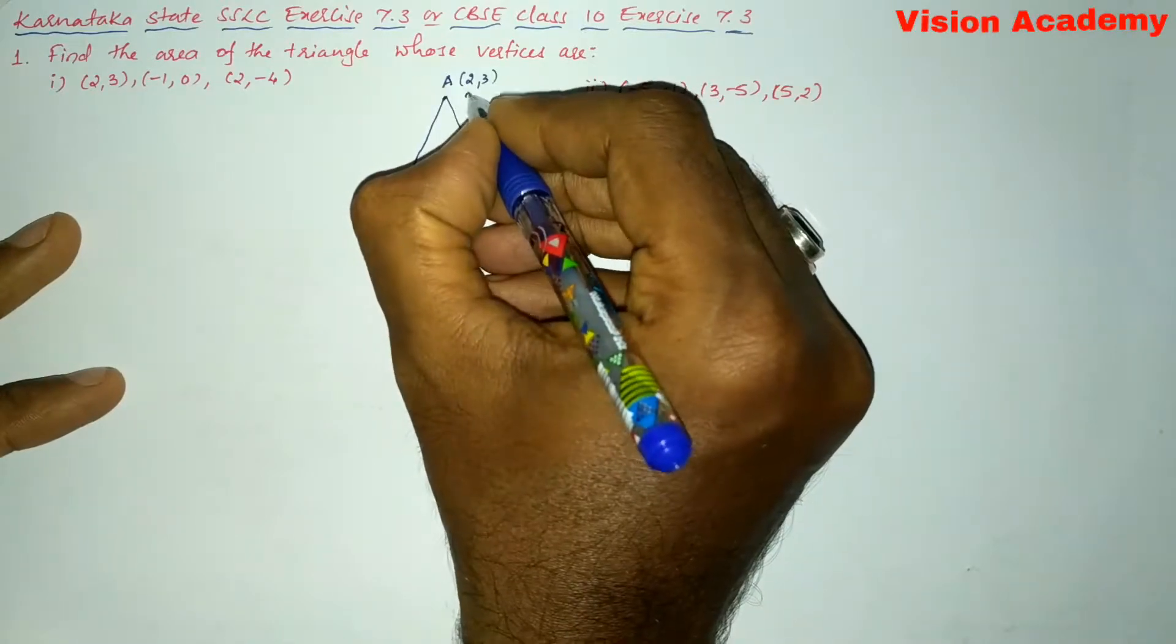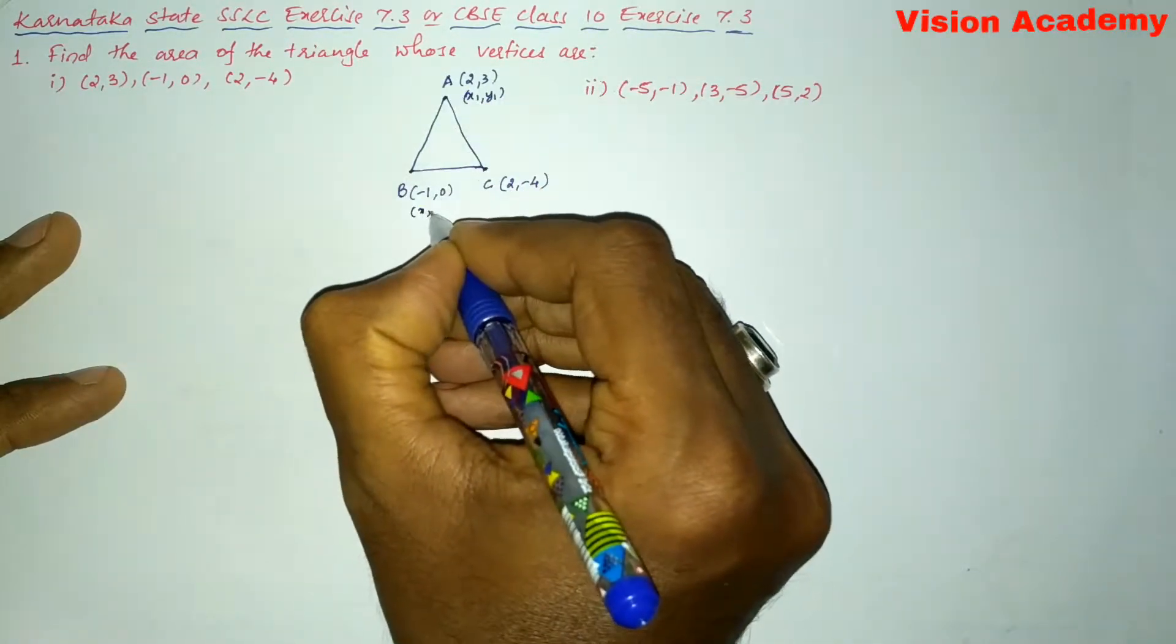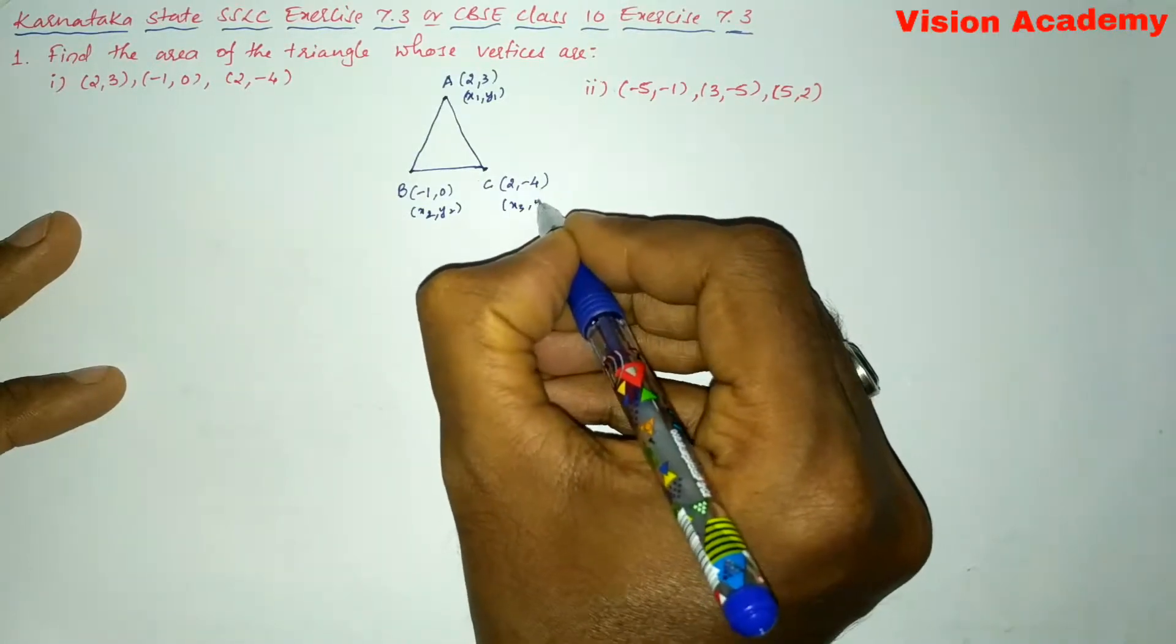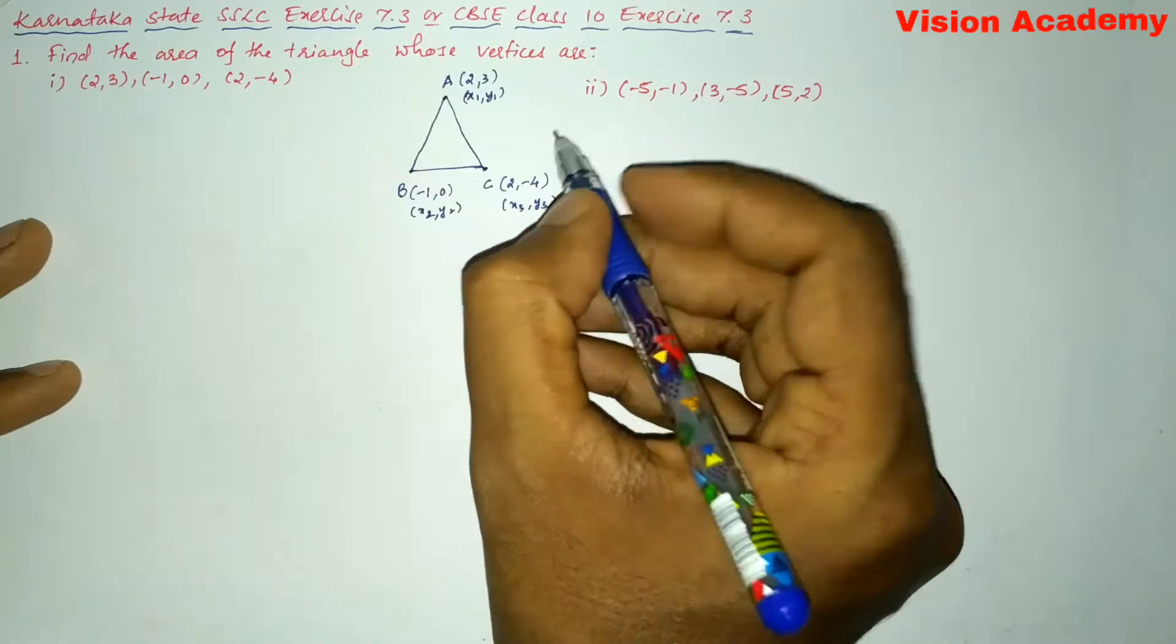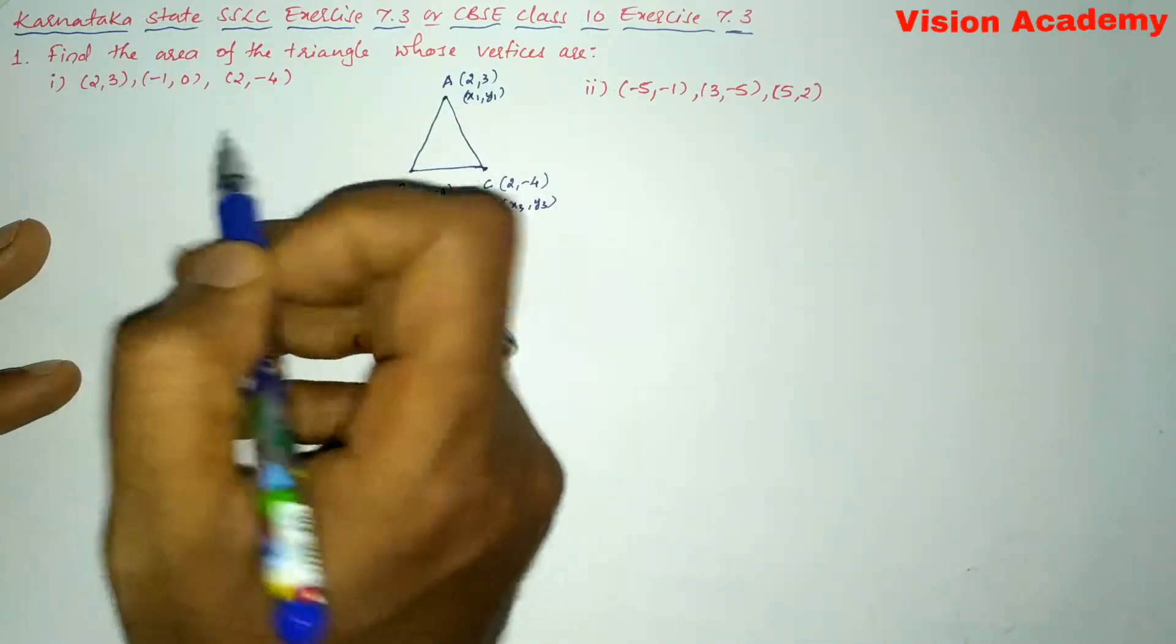So let us take this one as x1,y1, and this one as x2,y2, and this is x3,y3. In order to find the area whenever the vertices are given,